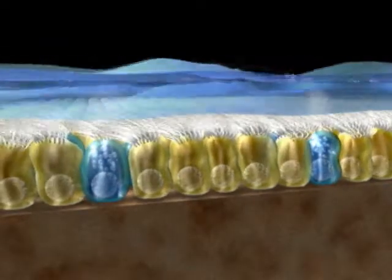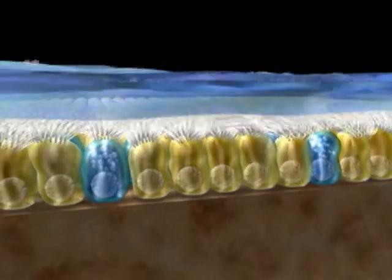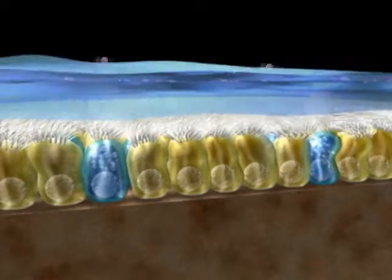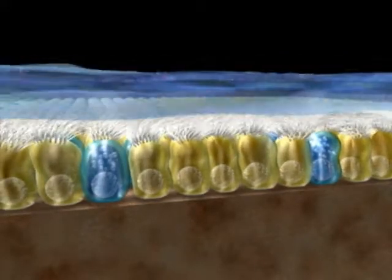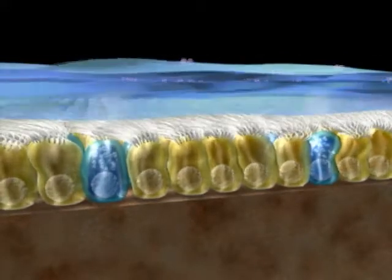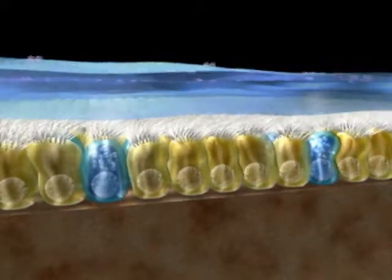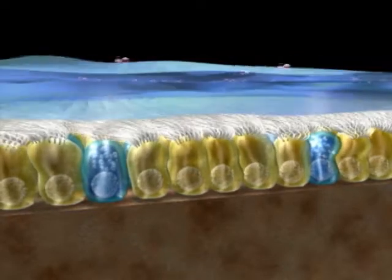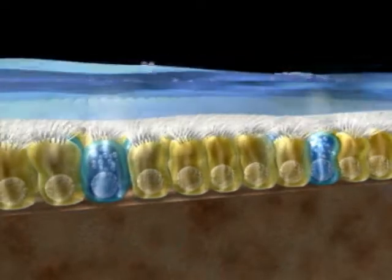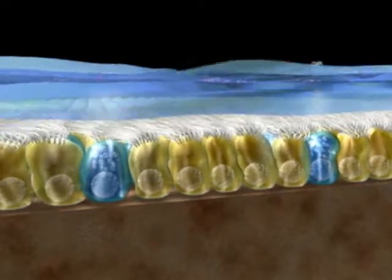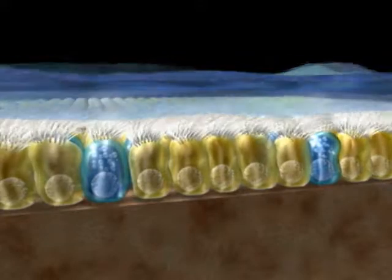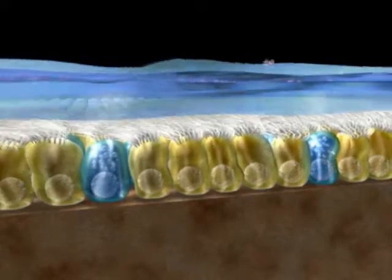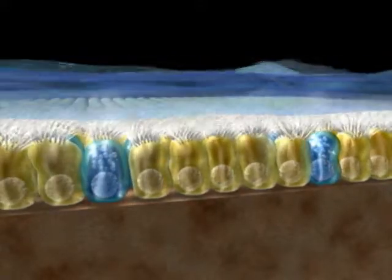The frequency of the ciliary beat ranges from 10 to 20 hertz at body temperatures, with an average of 14 hertz. It remains fairly constant at temperatures between 32 degrees Celsius and 40 degrees Celsius and is not temperature dependent within this range.